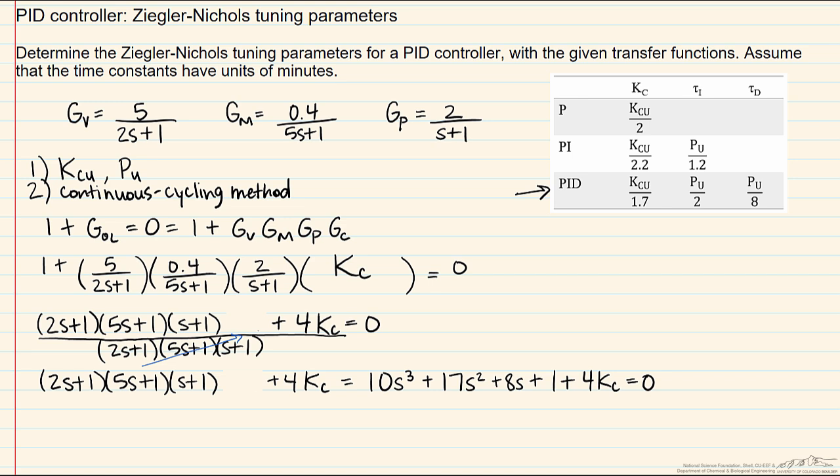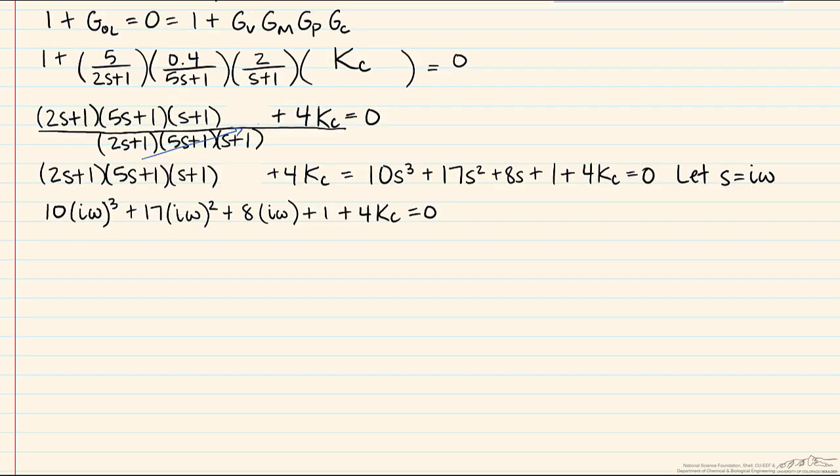From here we can do a little bit of math. The next step in direct substitution is we let s equal i omega, and then we substitute that in for all our values here, for s in the equation. We then take advantage of the fact that the imaginary i squared equals negative one.